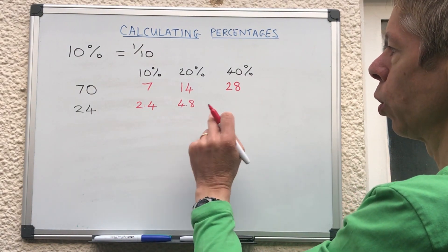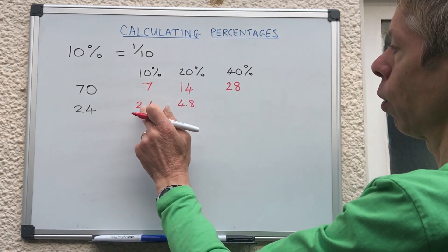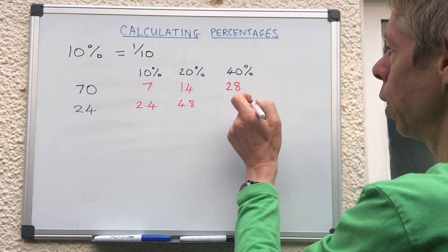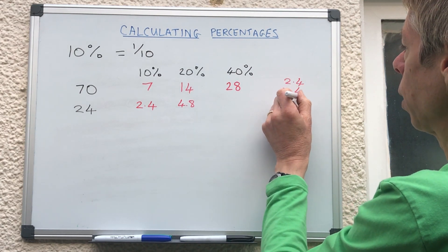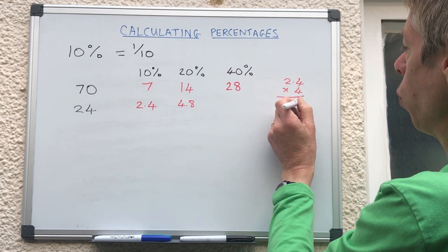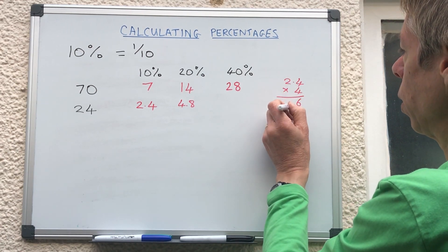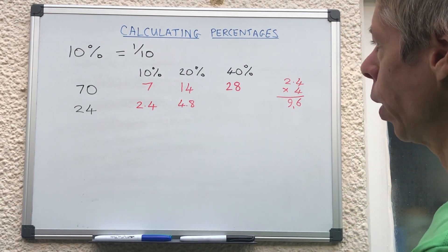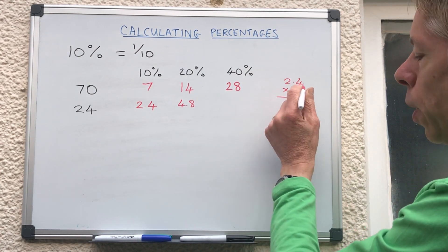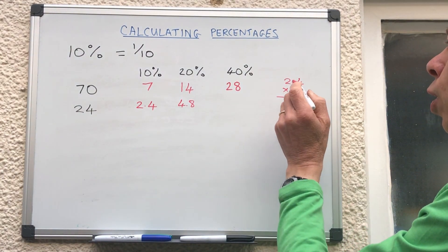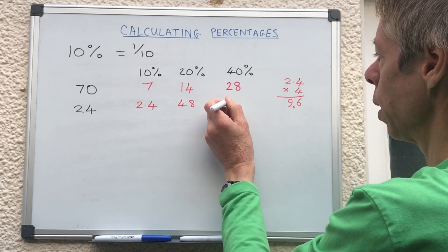Twenty percent of twenty four is 4.8. Again if we wanted to know forty percent all we'd have to do is times that number by four. So we're gonna do a little column multiplication over here, could have done it in our head but we're gonna do it like this. Four fours are sixteen and four twos are eight so that's 96. We know roughly it's going to be four times two is eight so the decimal point must go in there. So it's 9.6.